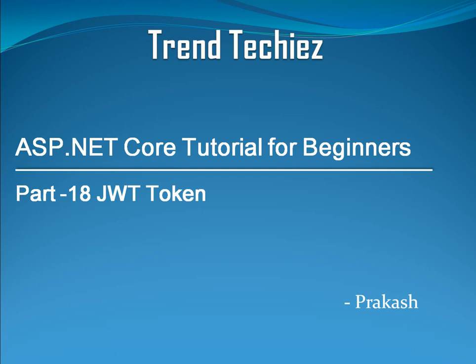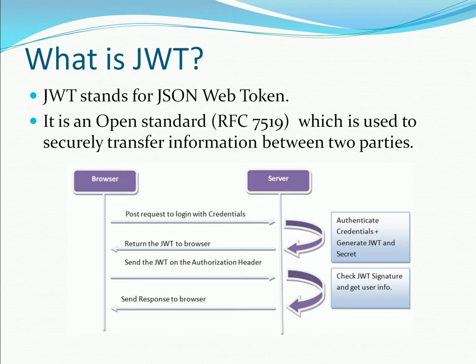Before implementing that, I will tell you what is JWT and what is the structure, so that we will have a complete understanding. So what is JWT? JWT stands for JSON Web Token. It is an open standard used to securely transfer information between two parties — the client and server, such as a browser, third-party API, mobile application, and our API as the server.